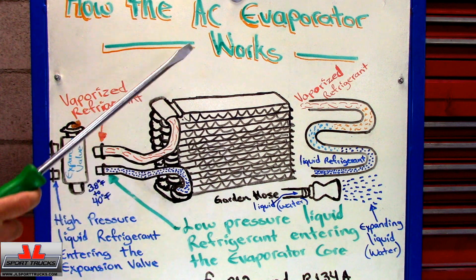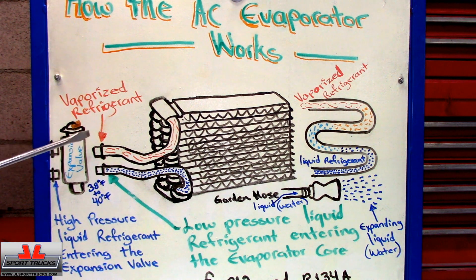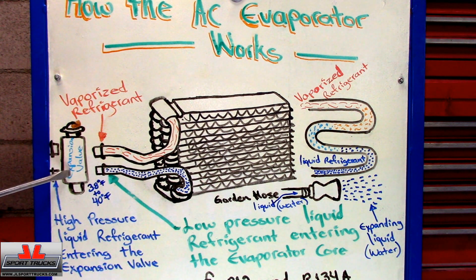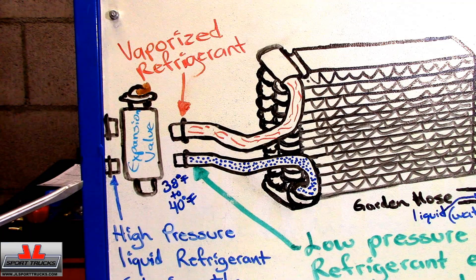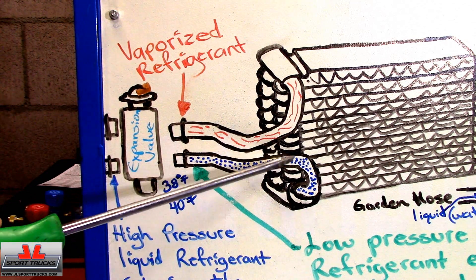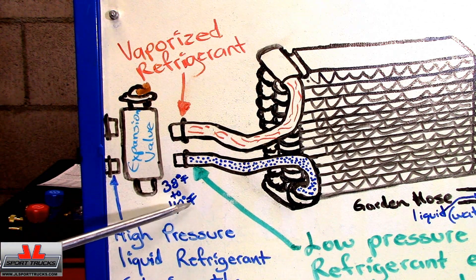Now that we have the camera up close, let's go over the drawing. The last video I made explained the function of the expansion valve. The liquid line at the bottom of the expansion valve, when a block type, is the one that carries the high pressure liquid refrigerant. As it enters the expansion valve, its flow is restricted. It's important to note that as the pressure of the refrigerant drops, so does the temperature. The temperature of the line that enters the evaporator is going to be anywhere from 38 to 40 degrees Fahrenheit.